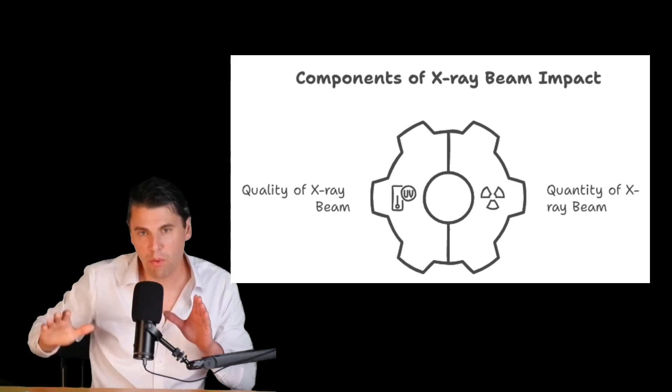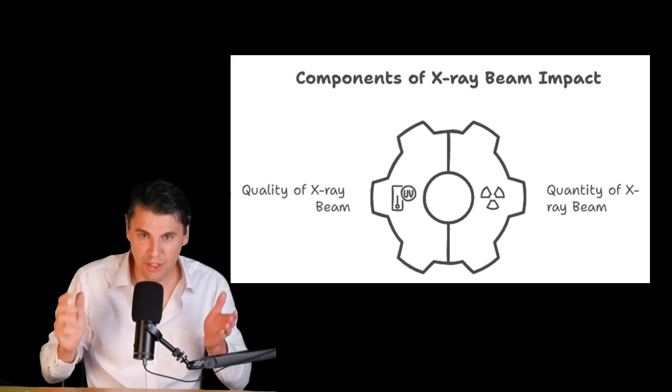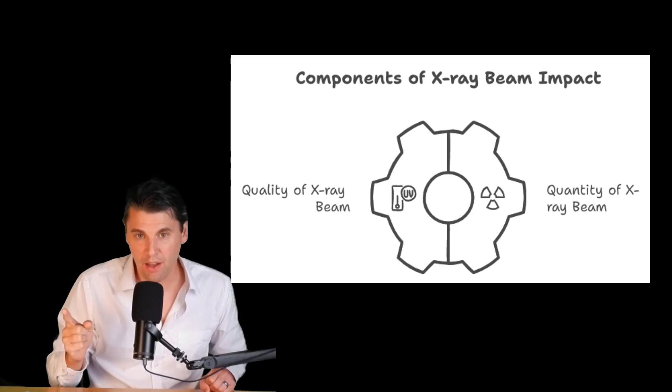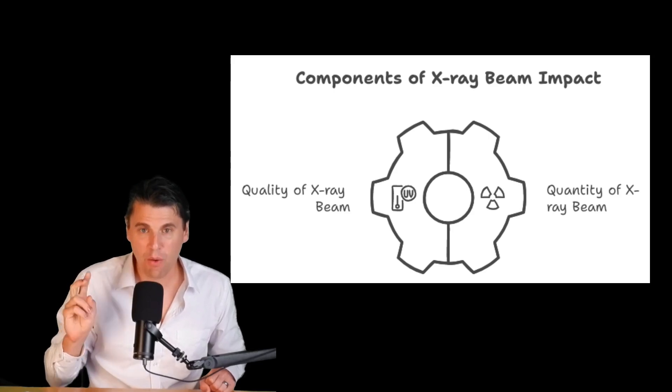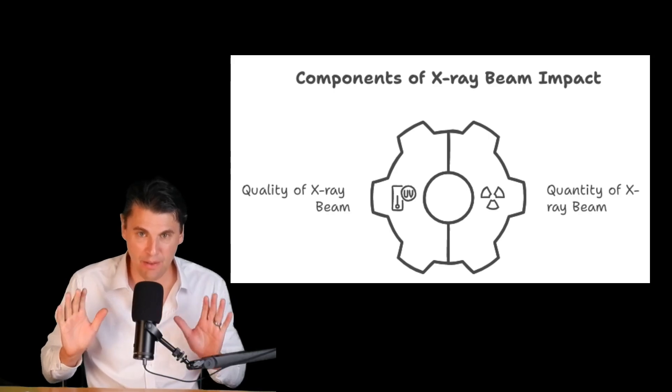Then to keep things simple, what we like to do is focus on a couple of descriptors of our spectra. One we call the quality of the x-ray beam, one we call the quantity of the x-ray beam. And how do these things actually impact the x-ray spectra themselves?